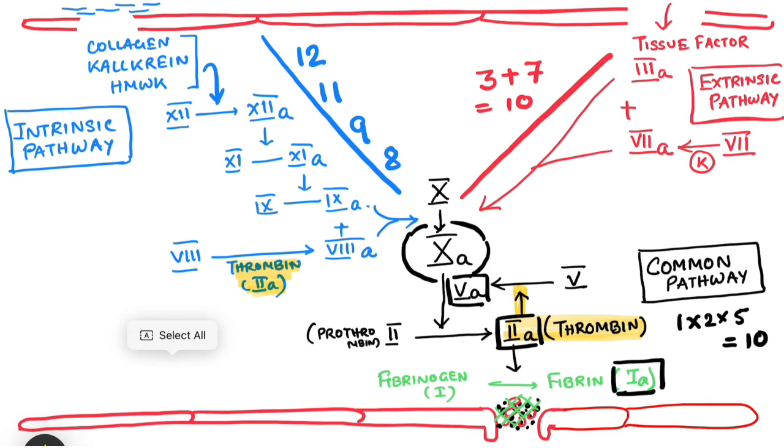Now, where comes our factor 13? Factor 13 stabilizes the plug. So, factor 13 comes at the very end where it stabilizes the plug or stabilizes the fibrin mesh work. In this, we have to remember two more things. Two very important elements play a role in this coagulation cascade. One is our calcium. Another one is vitamin K.